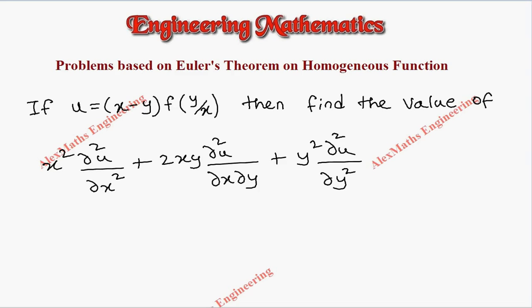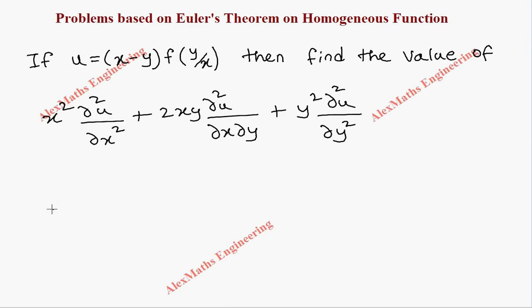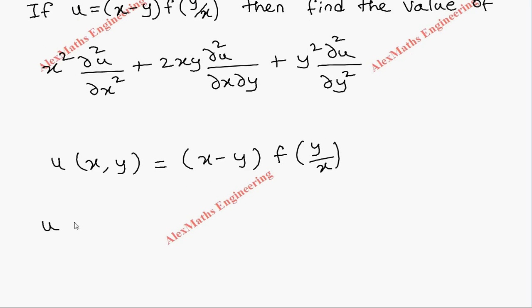Now let's take the function u which is nothing but x minus y into f of y by x. To check whether it is a homogeneous function or not, we have to replace x as tx and y as ty.